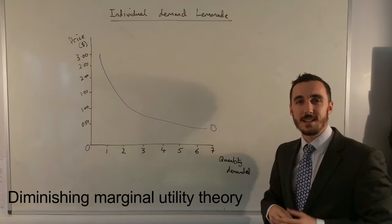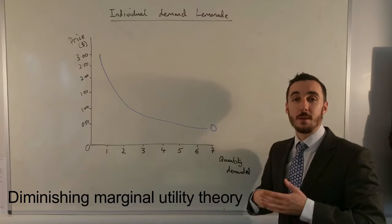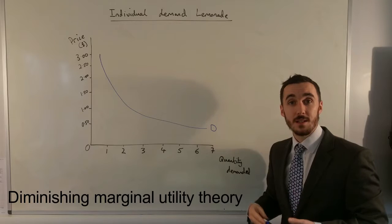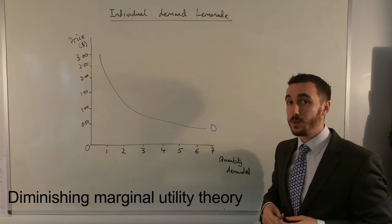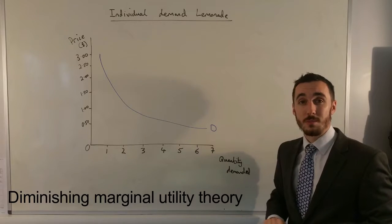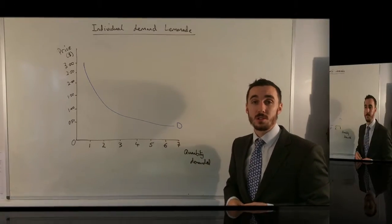Hello, I'm Mr. Burton and today we're going to be going through diminishing marginal utility and we're going to see how that has a direct influence on the individual demand curve for a good or service.